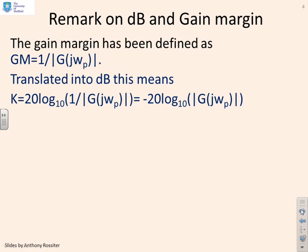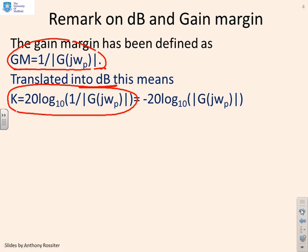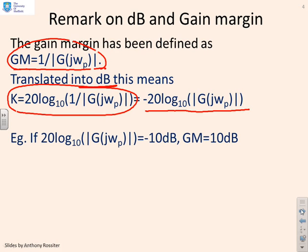A remark on decibels and the gain margin: the gain margin is 1 over the modulus of G(jω_p). If I express this in decibels, that's 20 log₁₀ of 1 over the modulus of G(jω_p), which gives minus 20 log₁₀ of G(jω_p). The Bode diagram plots 20 log₁₀ of G(jω_p), so the only difference is the minus sign. For example, if the Bode diagram reads minus 10 decibels at a given frequency, then the gain margin is plus 10 decibels — you simply reverse the sign.